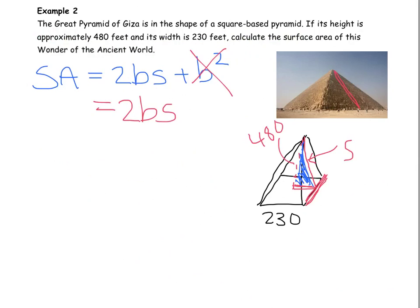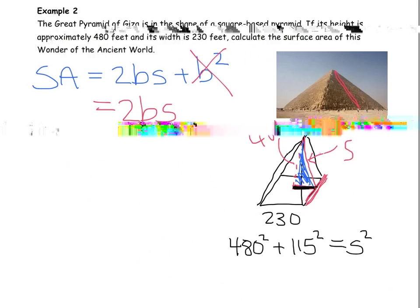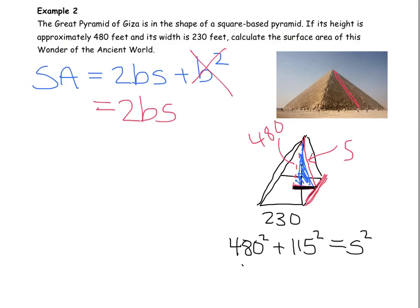It's this triangle relationship right here that we're going to use to find the slant. We know that the height is 480. We know that this side right here is actually half of 230. So if we set up our Pythagorean theorem relationship, we have 480 squared plus 115 squared equals S squared.